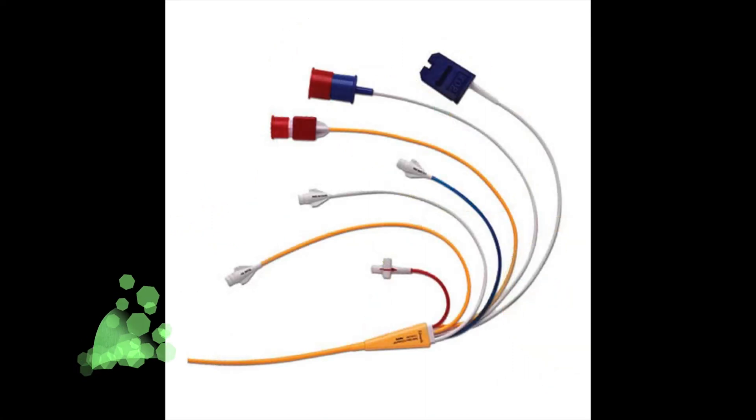The yellow port is the distal port. It is positioned in the pulmonary artery and attached to a pressure line, and measures pulmonary artery pressure and pulmonary capillary wedge pressure.